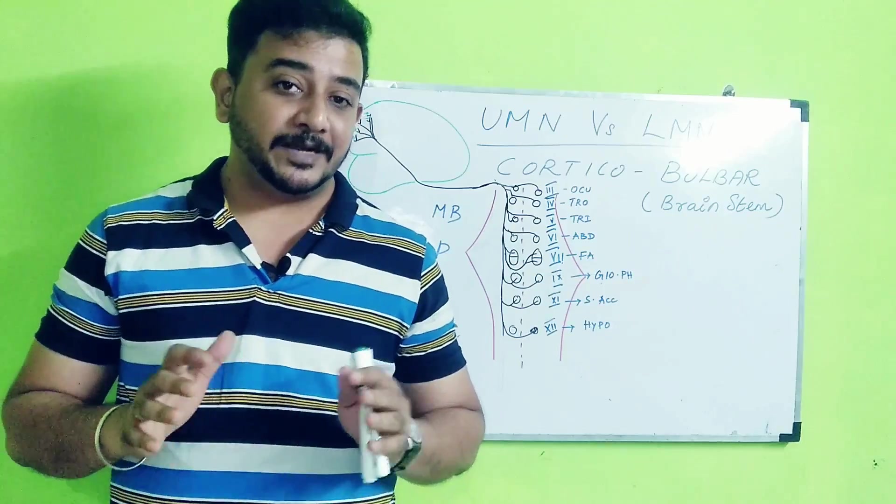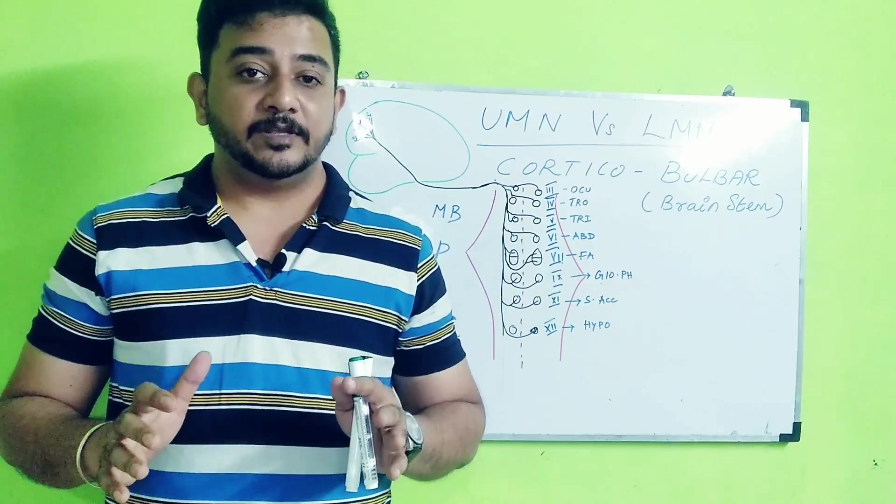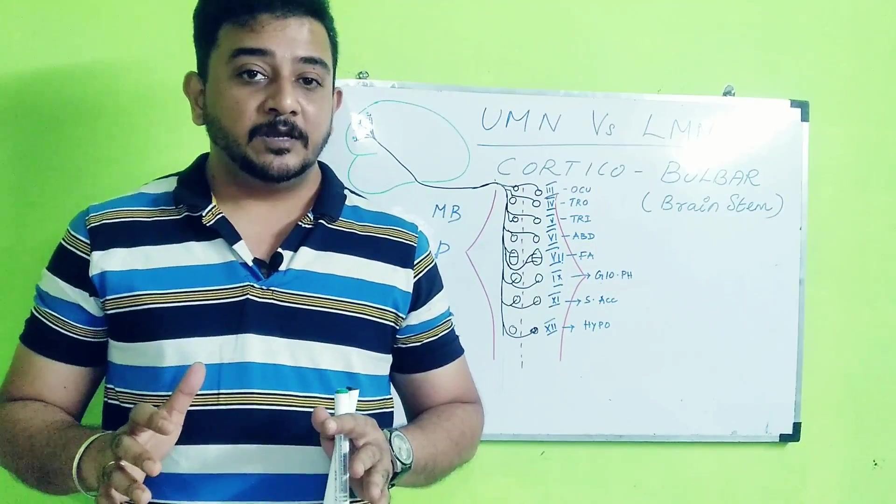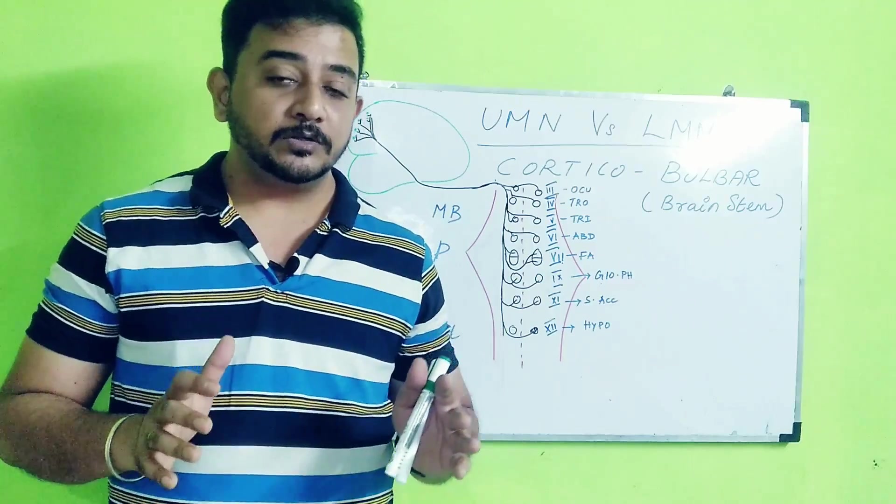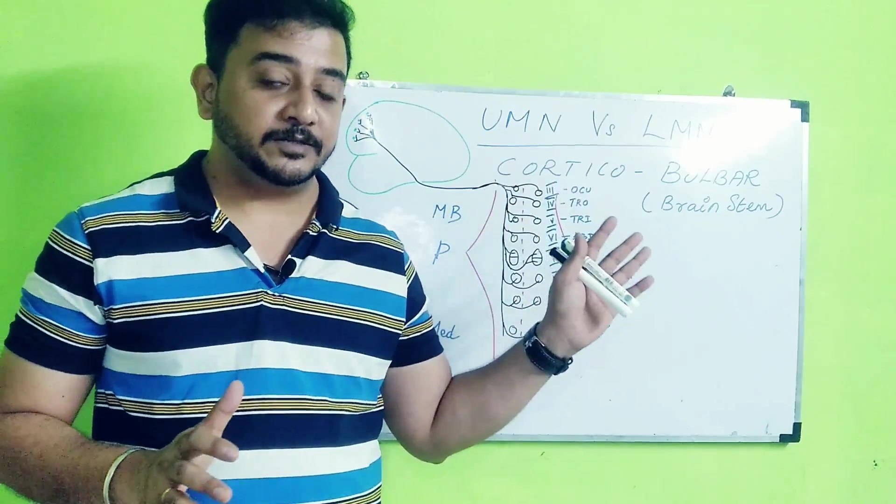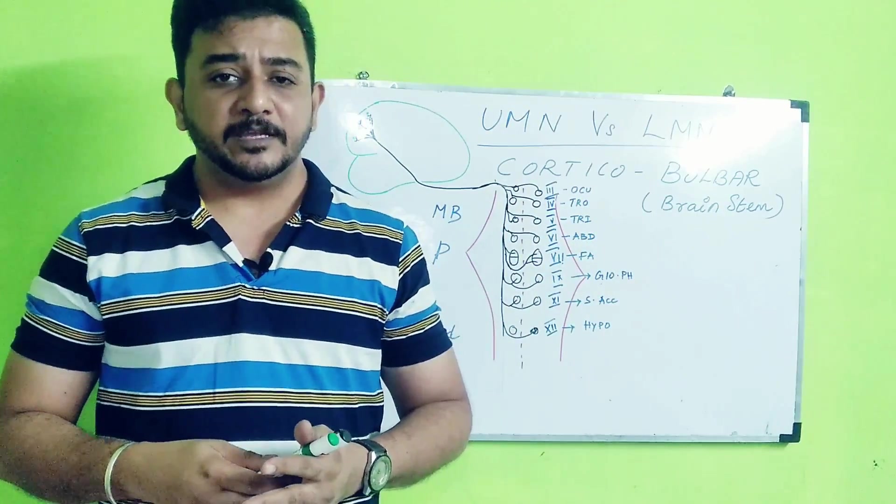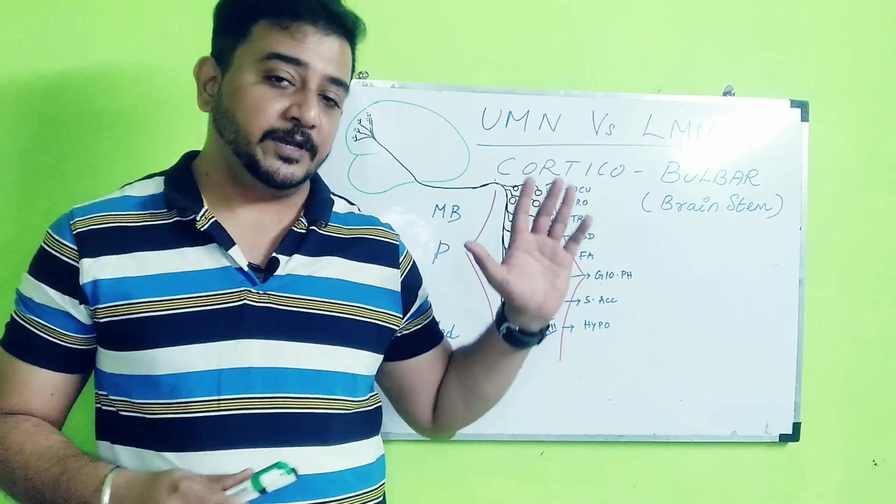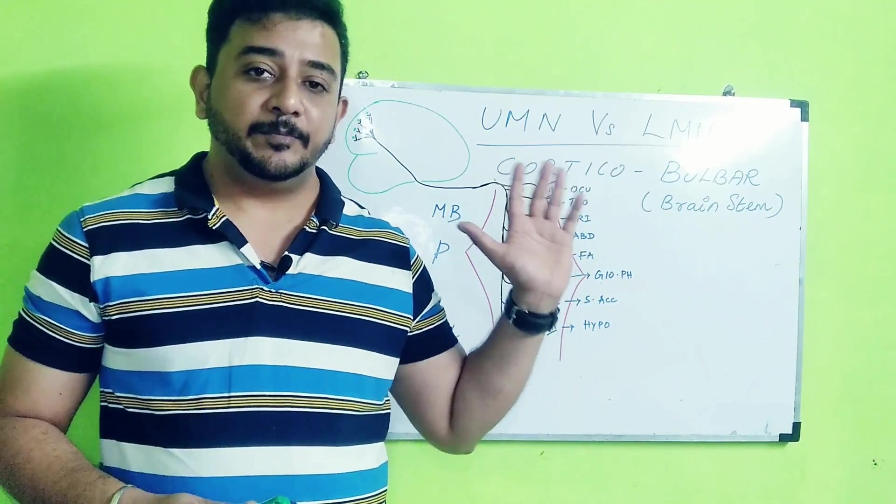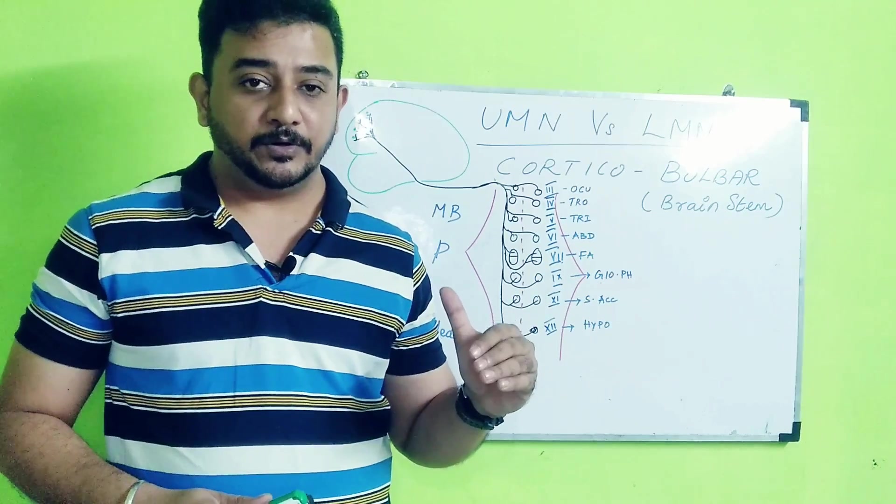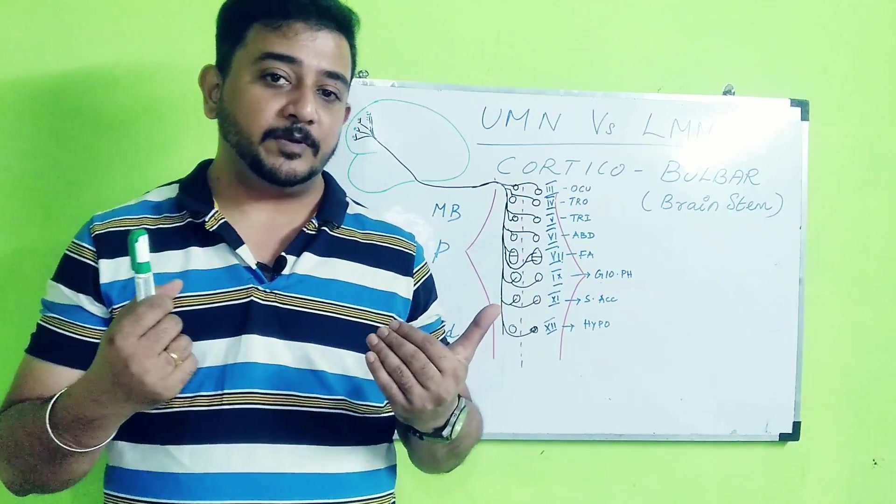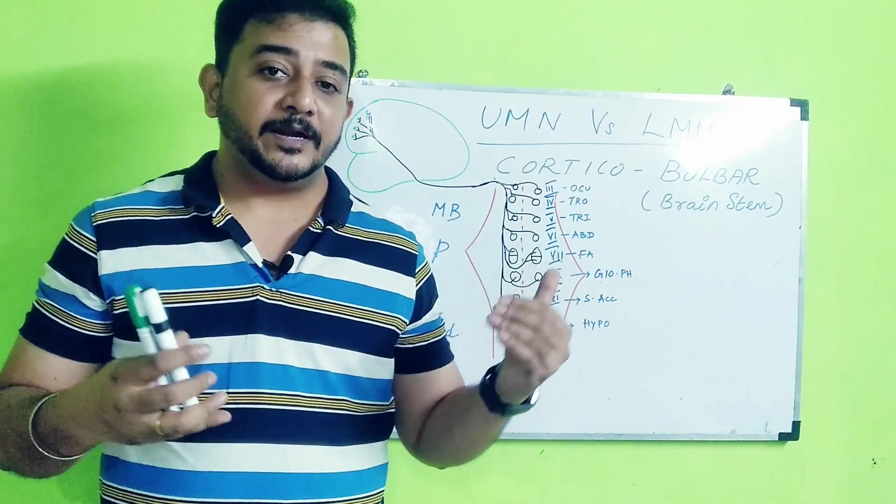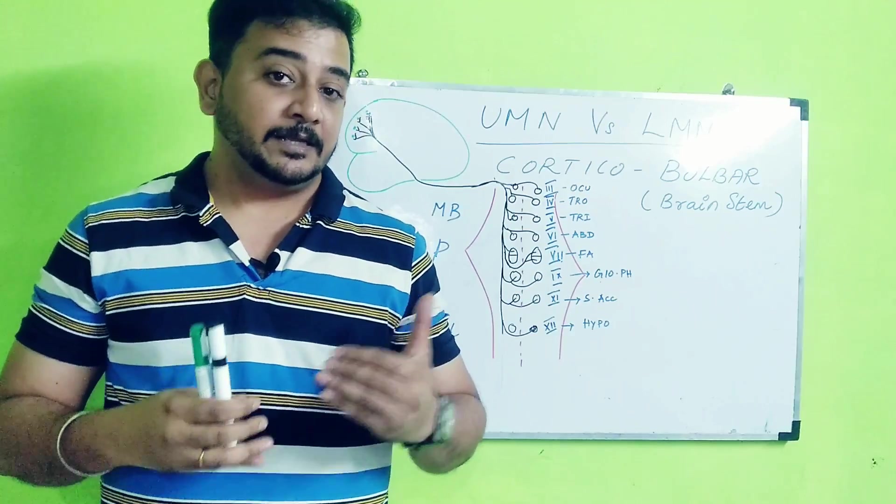We saw the corticospinal tract, which is one of the pyramidal tracts, but apart from that we also have a corticobulbar tract, a very often ignored tract when exam questions are asked to students. Here also we have upper motor neuron and lower motor neuron. The facial problems are also divided into upper and lower motor variants.